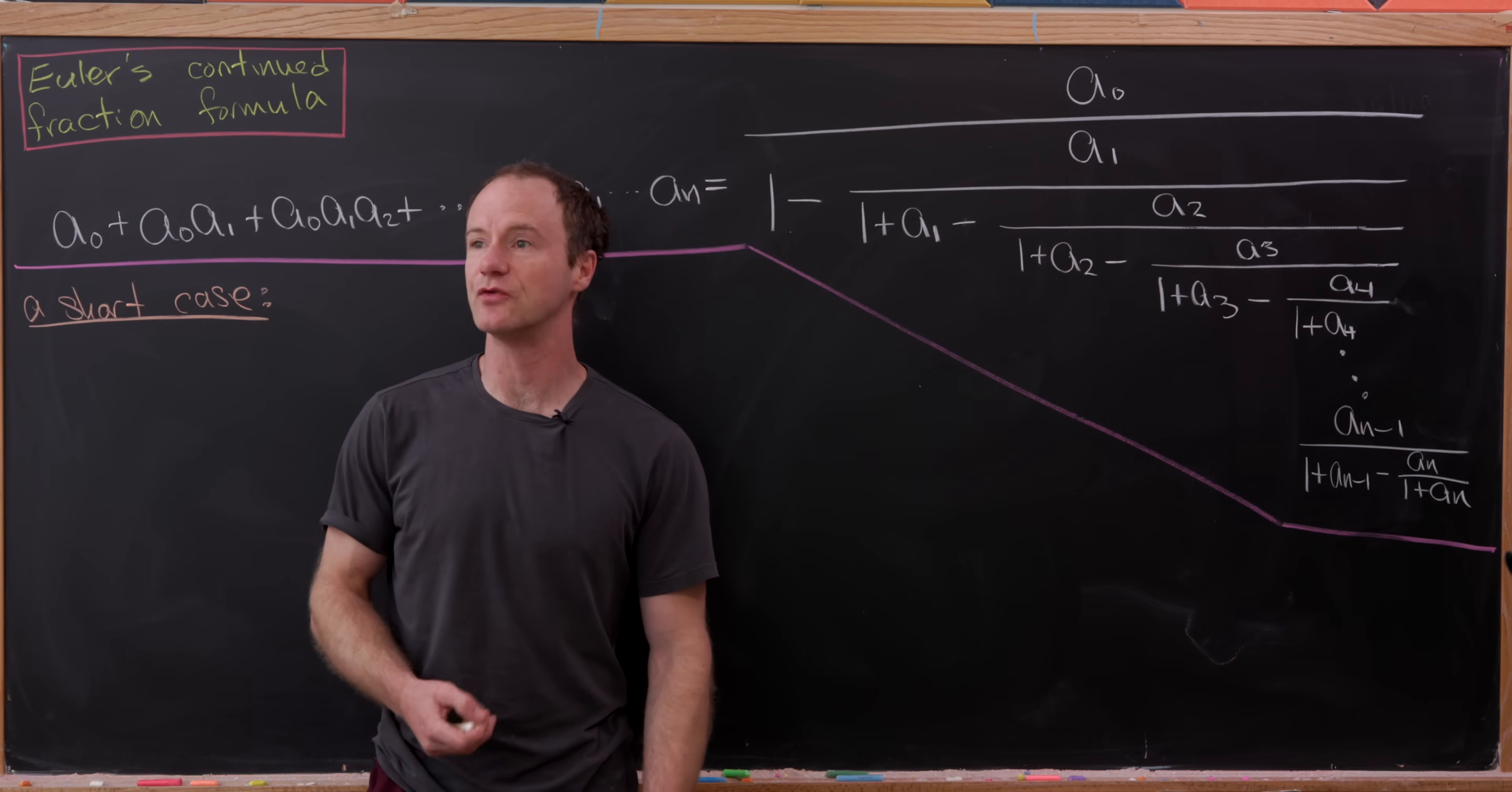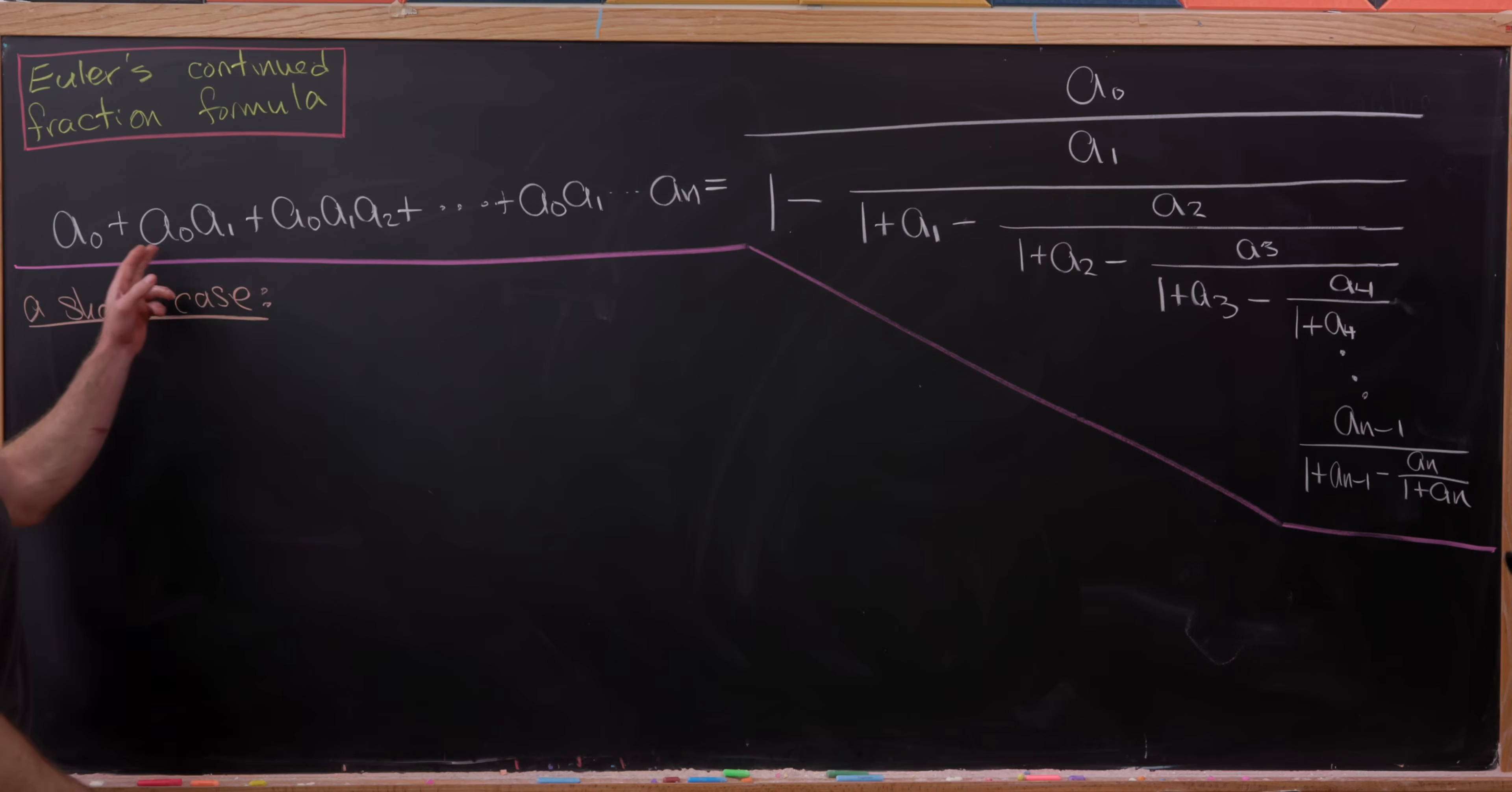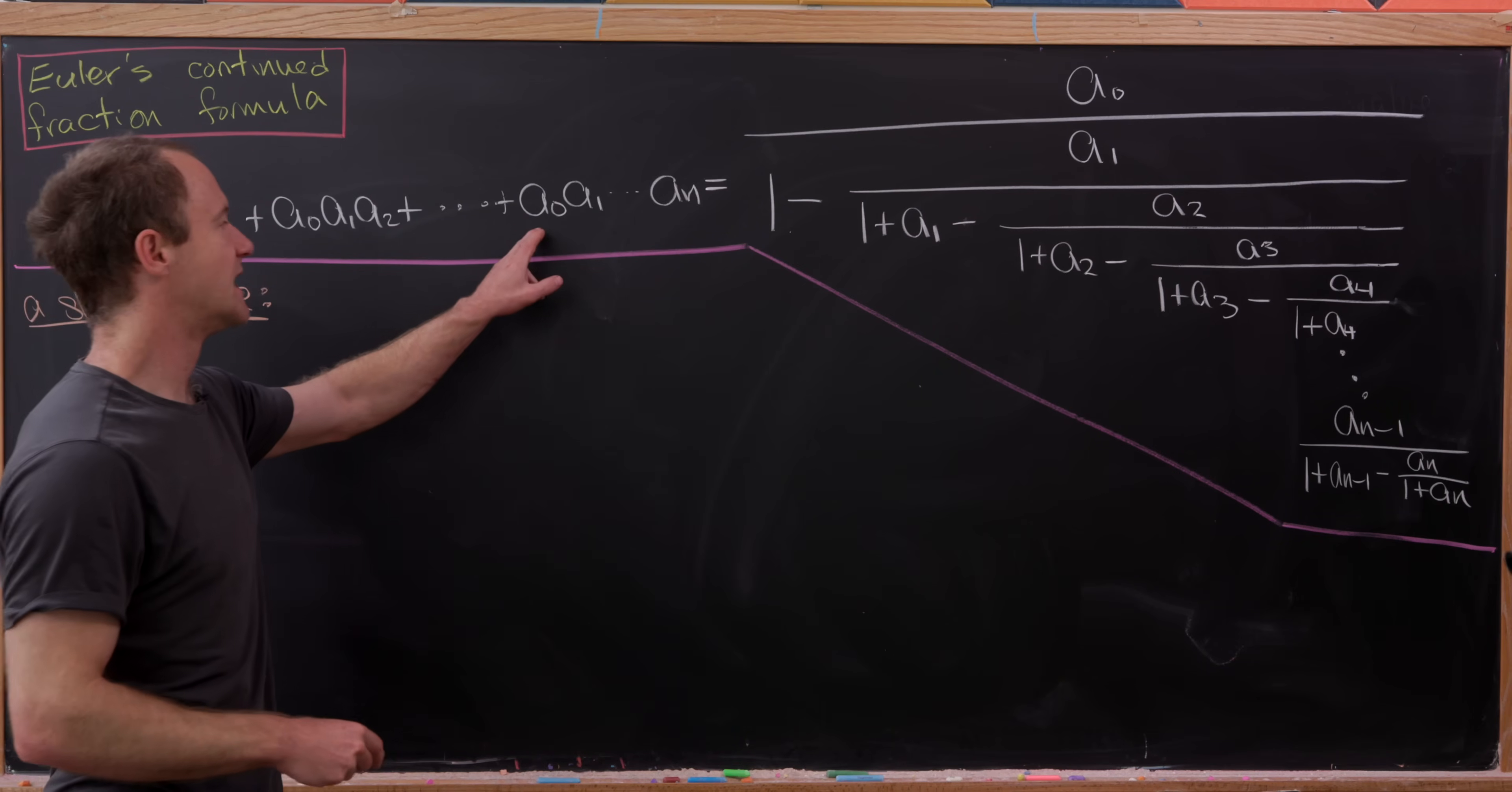Today I'd like to look at a nice continued fraction formula which is due to Euler. And so what it says is that this sum of increasing products, so we've got a0 plus a0 times a1 plus a0 times a1 times a2 all the way up to a0